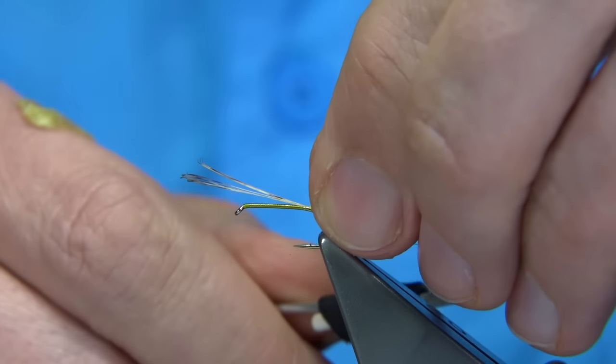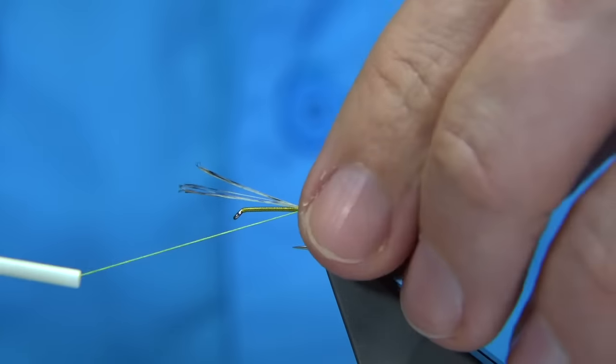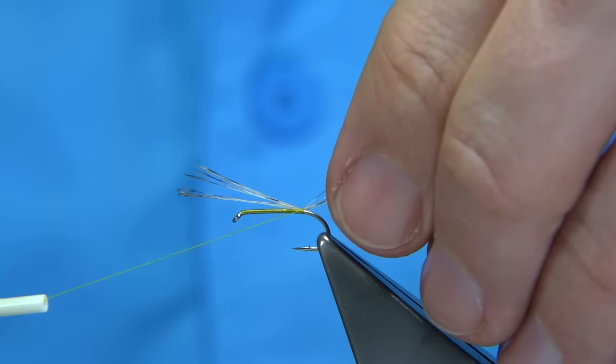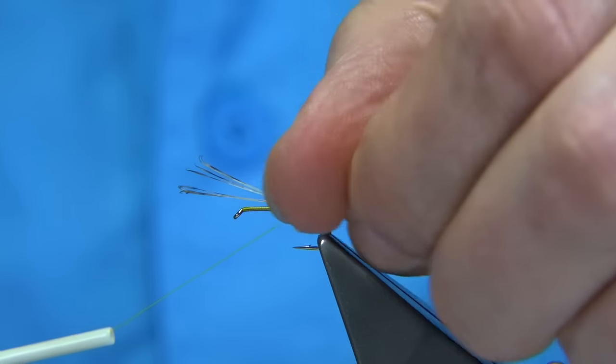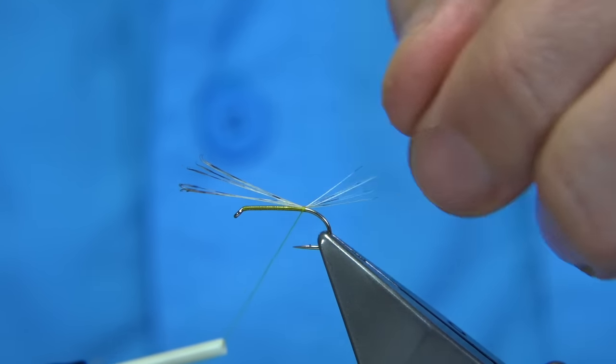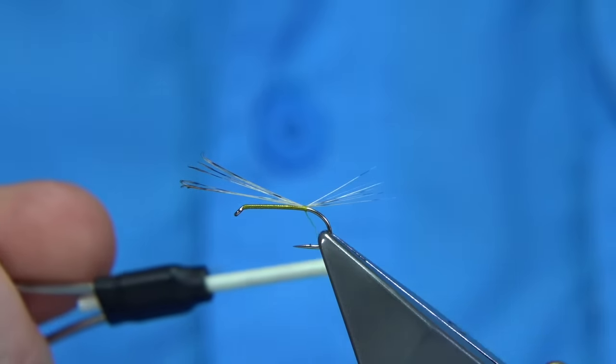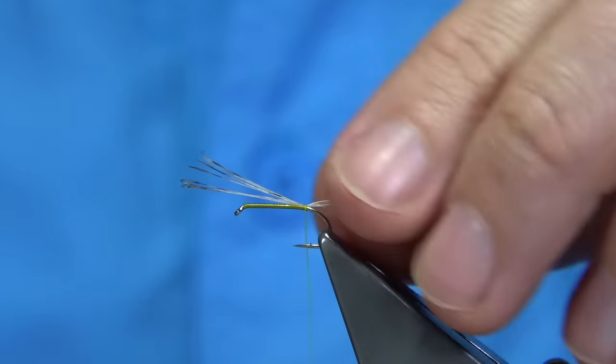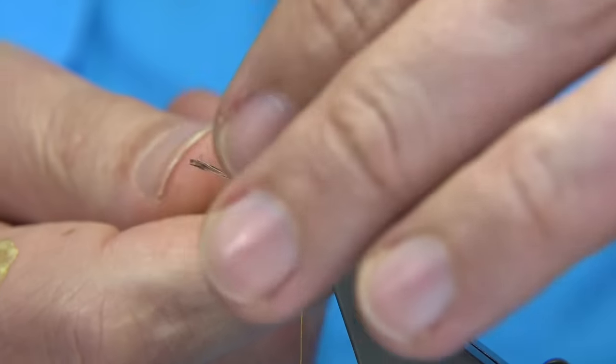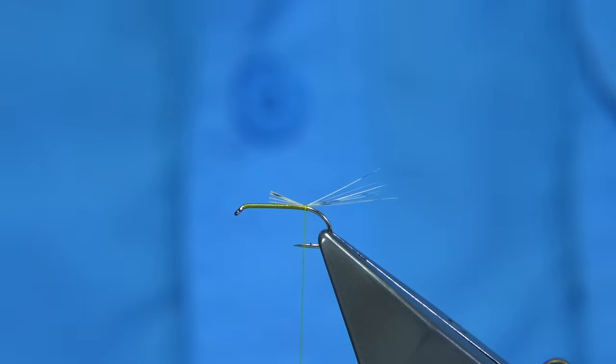Bring the thread underneath the tail fibers and then pull it towards the eye and separate the fibers. When you're happy, separate it nice and then you can lock them in with a turn. The body is two thirds of the shank. Trim that away.